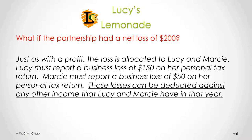The loss is allocated based on their agreed split of profits and losses, which was 75/25. So Lucy must report a business loss of $150 on her personal tax return, and Marcy must report a business loss of $50. The tax advantage is that those losses can be deducted against any other income Lucy and Marcy have in that taxation year, potentially reducing their personal tax.